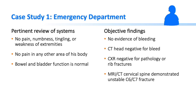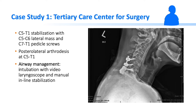When the patient arrived at the emergency department, there were no pain, numbness, tingling, or weakness of the extremities, and bowel and bladder function was normal. CT head was negative for bleed, chest x-ray was negative for rib fractures, but MRI and CT of the cervical spine demonstrated an unstable C7 fracture. The patient was transferred to a tertiary care center and underwent C5 to T1 stabilization with posterior arthrodesis. Airway management was accomplished with video laryngoscope and manual inline stabilization.